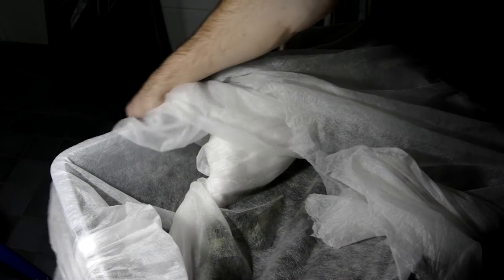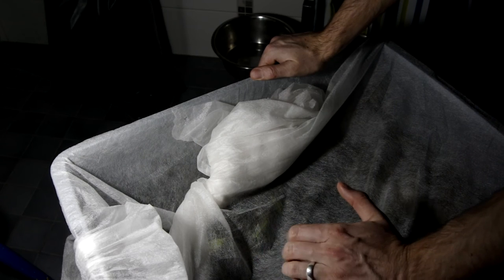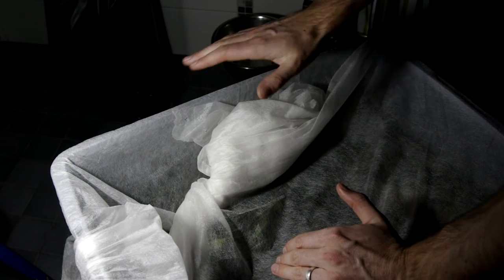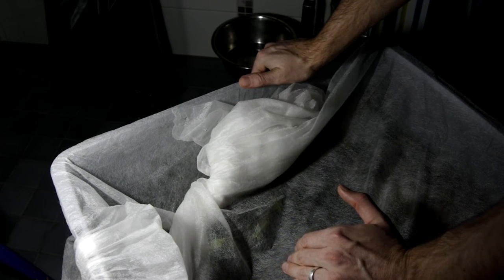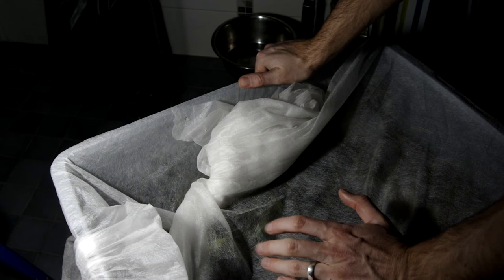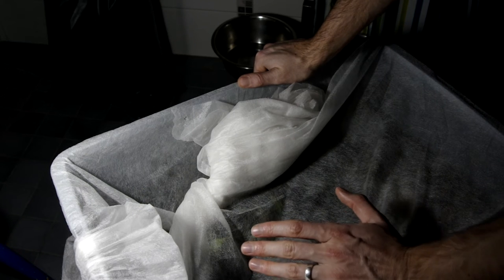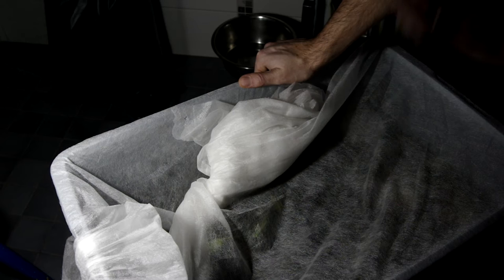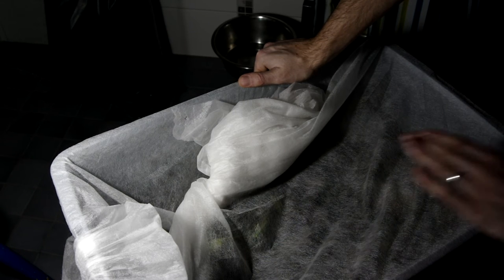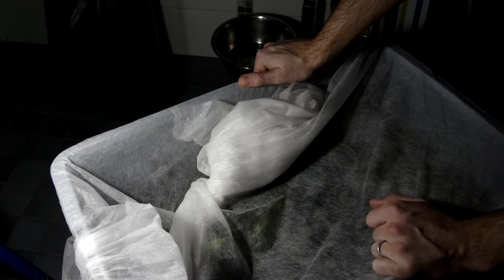So after months and months of battling these flies, using the vinegar traps, using predatory nematodes, drying it out, reducing the amount of food, reducing the water in the food, all these very time-consuming activities, including even killing all the adult flies multiple times per week trying to break the cycle, nothing worked.